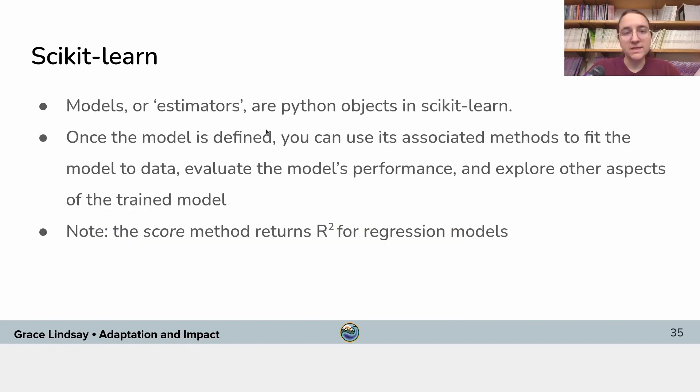So when you build a model, they're called estimators, and they're Python objects in Scikit-learn. You first define the model, and then once you define it, you can fit it to data. It also has built-in functions for evaluating the model's performance, making new predictions from the model. And what you'll want to know in particular is that to get this coefficient of determination, the R-squared value for your model, you need to call the score method. Okay, now you get to try fitting your own model.